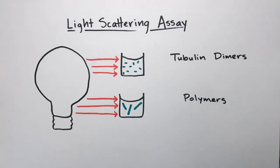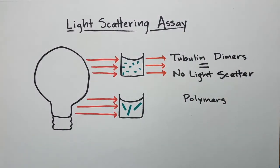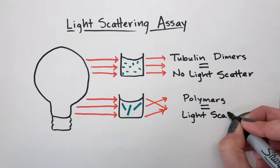To measure nucleation, we use the classical light scattering assay. This assay monitors the assembly of tubulin dimers into polymers that are large enough to scatter light.